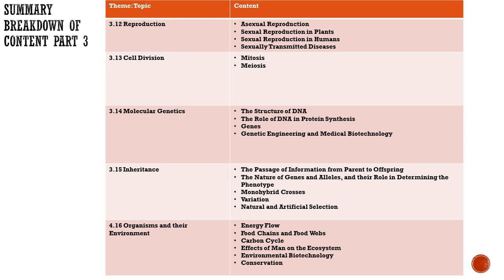Theme three involves reproduction in plants and humans, mitosis and meiosis, basic genetics such as structure of DNA, its roles, and later genetic engineering and biotechnology. Inheritance will mention topics such as natural and artificial selection, causes of mutation, genotype, phenotype, homozygous, and heterozygous concepts. And for the last theme, environmental pollution, growth of microorganisms in sewage treatment, carbon cycle, and conservation will be touched on.